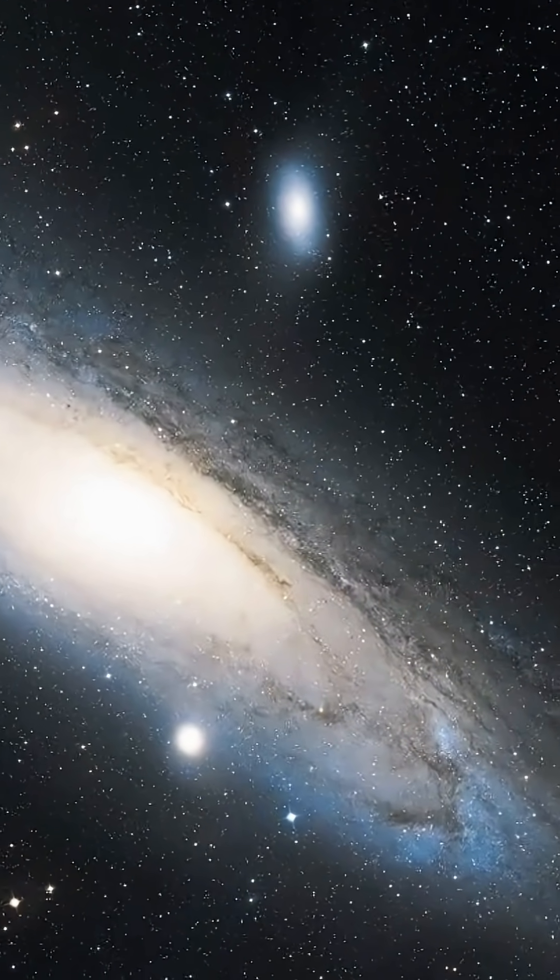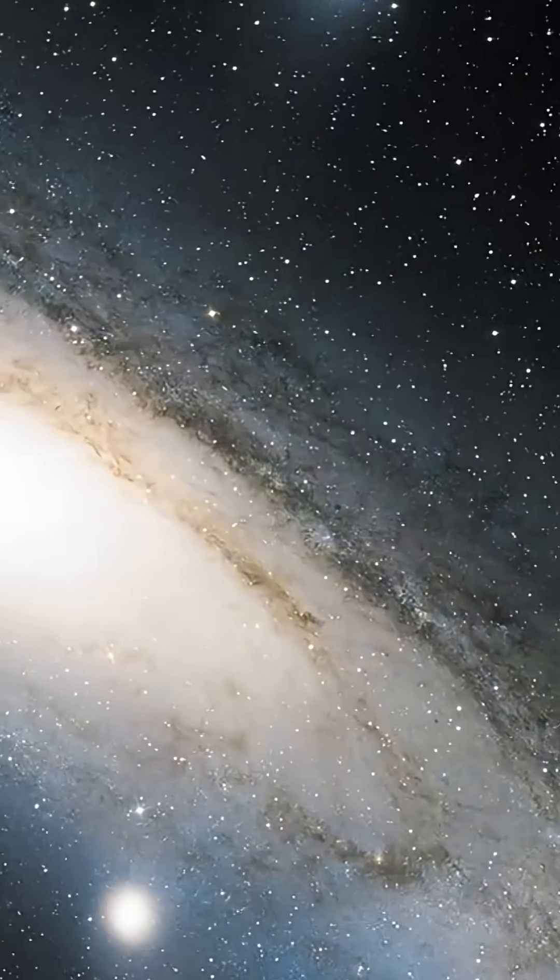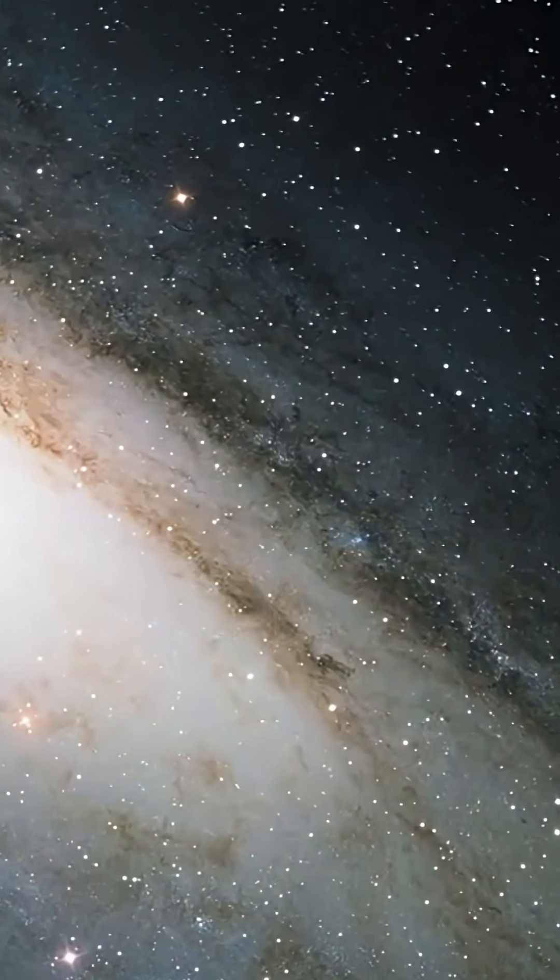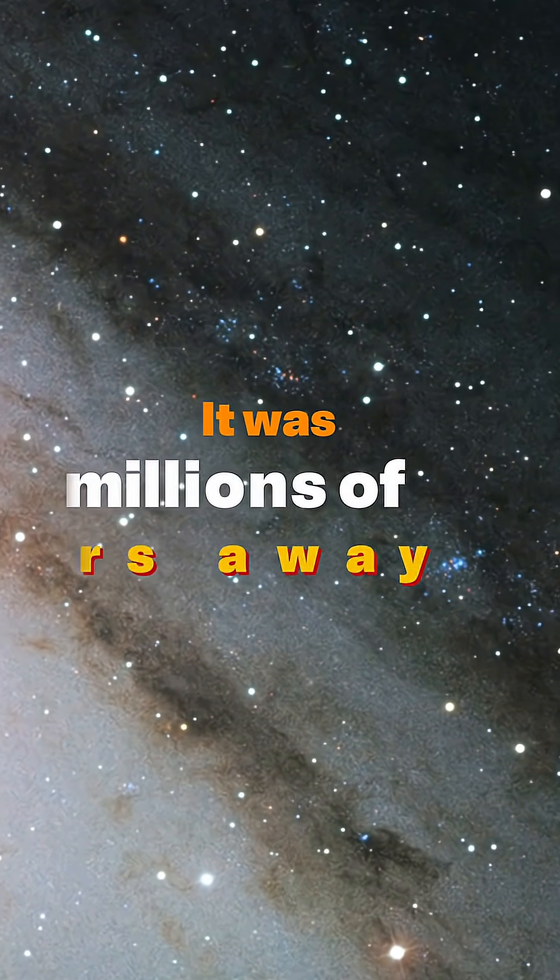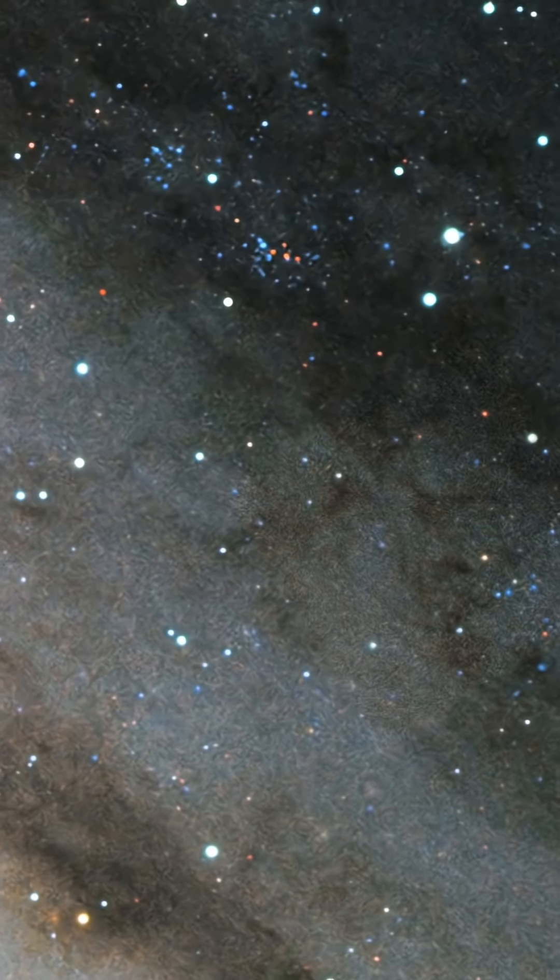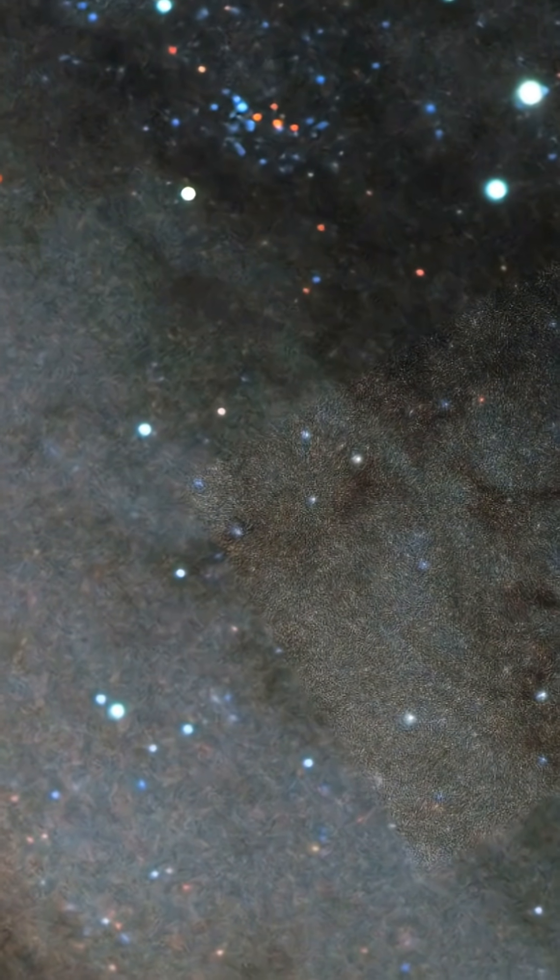This star was a cosmic yardstick. Hubble used its pulse to measure the distance to Andromeda, and his calculations were staggering. It wasn't a nearby cloud. It was millions of light-years away, a completely separate galaxy, as large as our own.